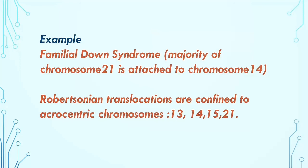In familial Down syndrome, a majority of chromosome 21 is attached to chromosome 14. Robertsonian translocations are confined to the acrocentric chromosomes — numbers 13, 14, 15, 21, and 22 — and occur when the long arms of two acrocentric chromosomes fuse at the centromere and the two short arms are lost.